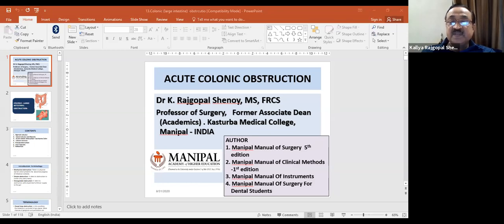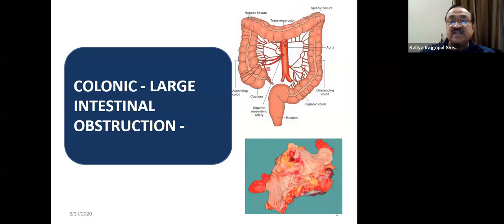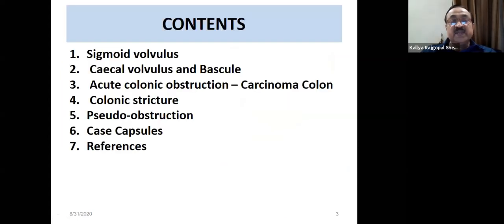Thank you very much. Today we'll be talking about acute colonic obstructions. The large intestine or colon extends from the cecum to the rectum. Carcinoma of the colon is definitely the most important cause of obstruction, but we'll also look at other causes. We'll start with the more common conditions and then go to colonic obstruction due to cancer.